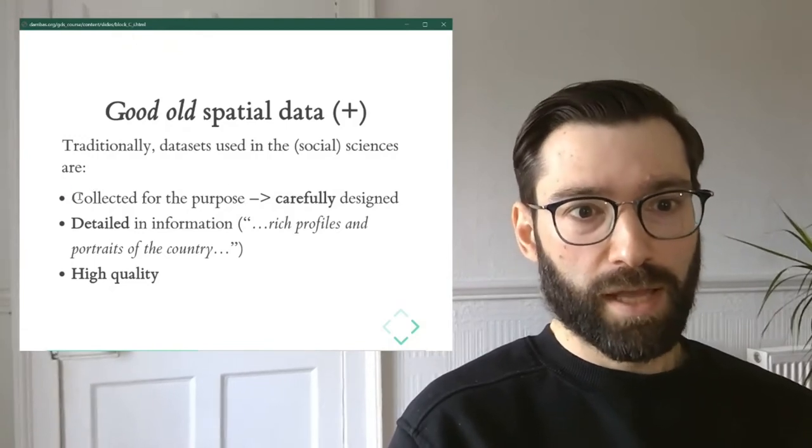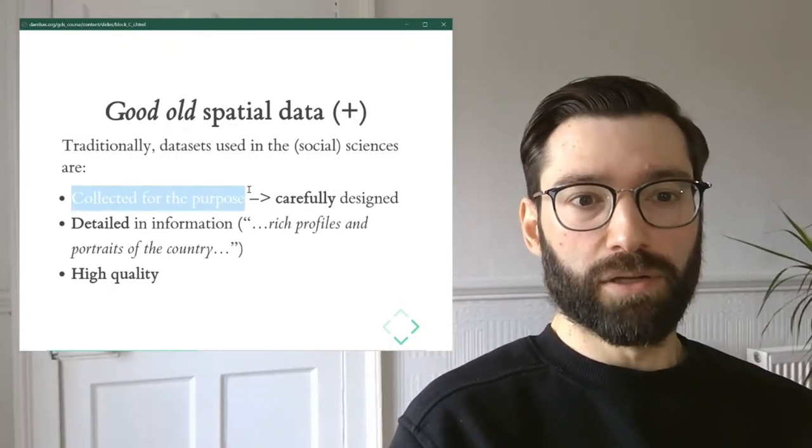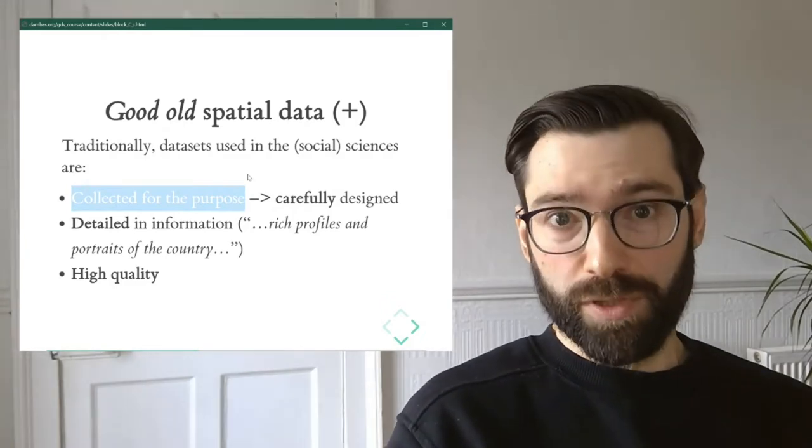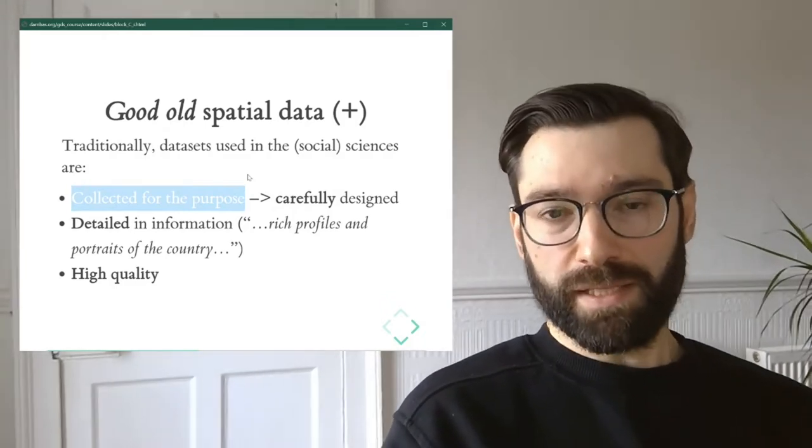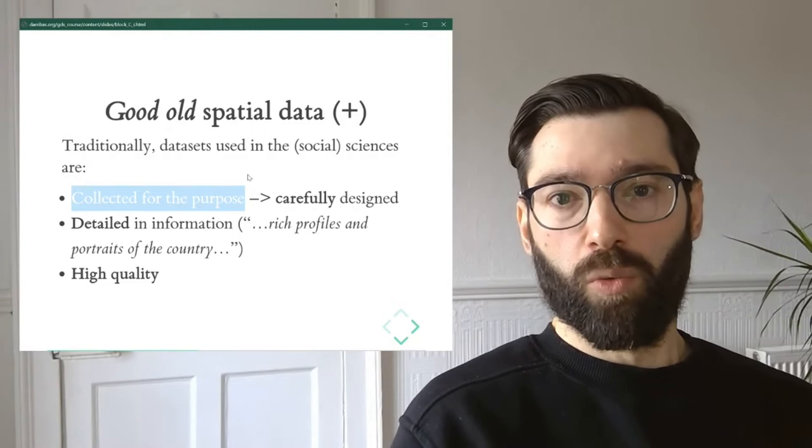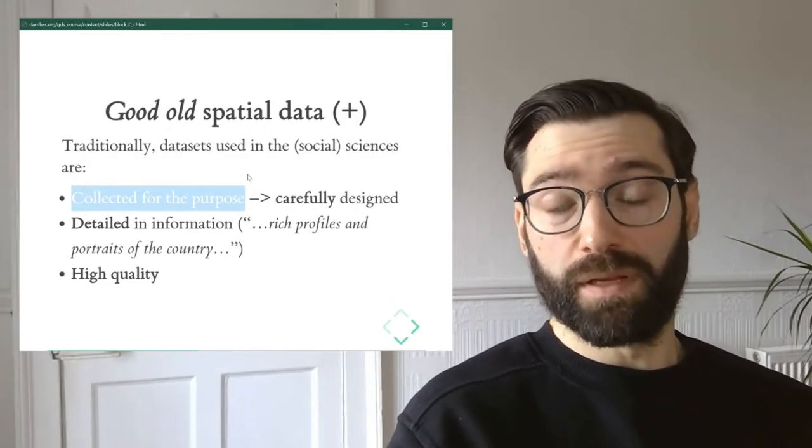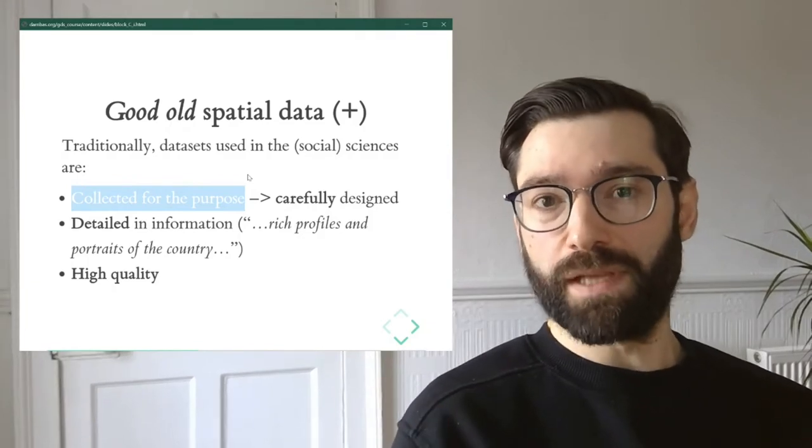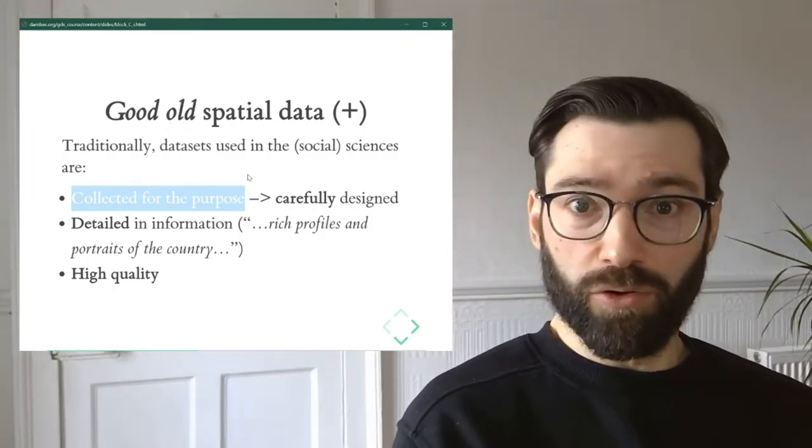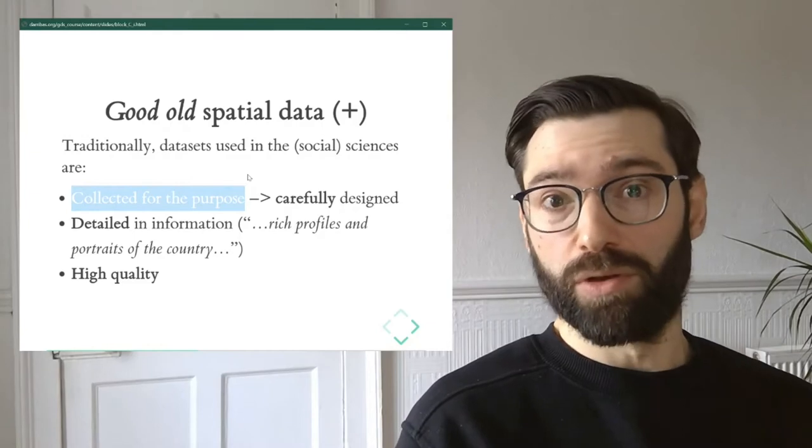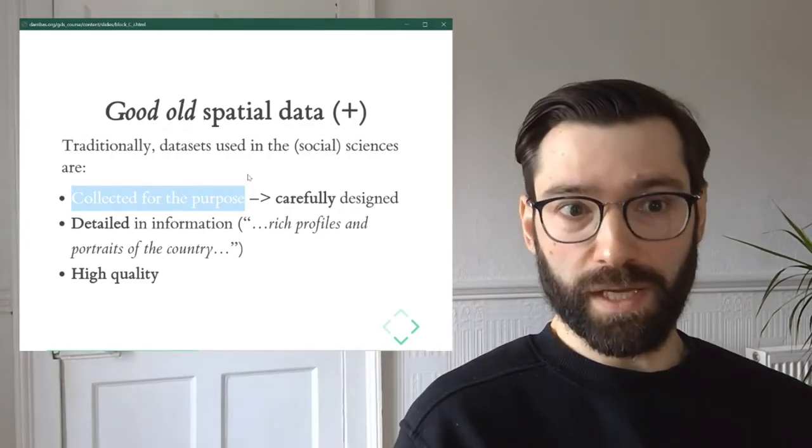The first one is that they are what I call here collected for the purpose. This means that they are data sets and databases that were designed to be storing information about whatever subject they are using. And this might seem something obvious and straightforward, but it's actually one of the main counterpoints when we later talk about new forms of data.